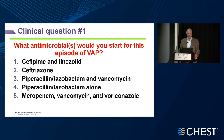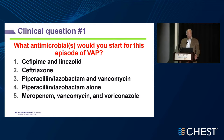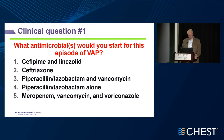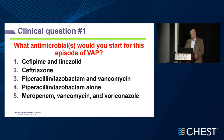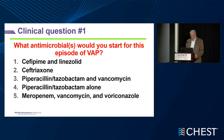She got to the unit, developed AFib, resulting in hypotension and need for intubation. Her white count was 23,000, lactate was 4, and creatinine had actually improved with treatment on the floor. The audience response question: what antimicrobials would you start for this episode of VAP? Options included cefepime-linezolid avoiding nephrotoxic drugs, ceftriaxone monotherapy, piperacillin-tazobactam and vancomycin, piperacillin-tazobactam alone to avoid vancomycin, or meropenem, vancomycin, and voriconazole for an immunocompromised host.